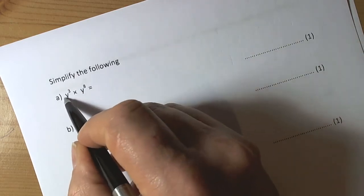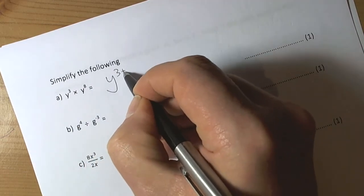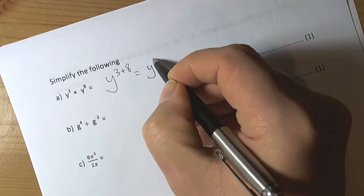So when we're multiplying with the same bases, we add the powers, so this becomes y to the power of 3 plus 8, so y to the power of 11.